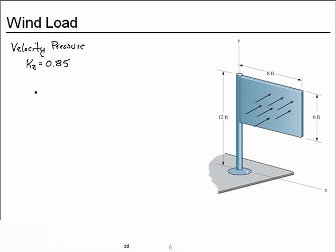KZT is a modifier that accounts for changes in pressure as wind approaches and descends from hilltops. For flat terrain, KZT is just 1.0.